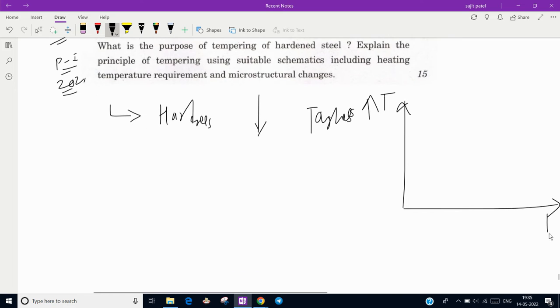The schematic diagram shows temperature versus time. First, we increase temperature up to the A1 temperature, which is the lower recrystallization temperature. Then we hold it for some period and then decrease the temperature to room temperature. The time for which we hold the workpiece at A1 temperature is called the soaking period.